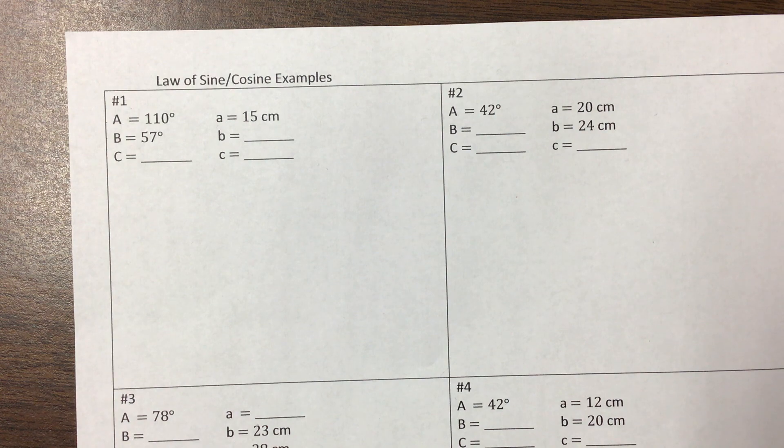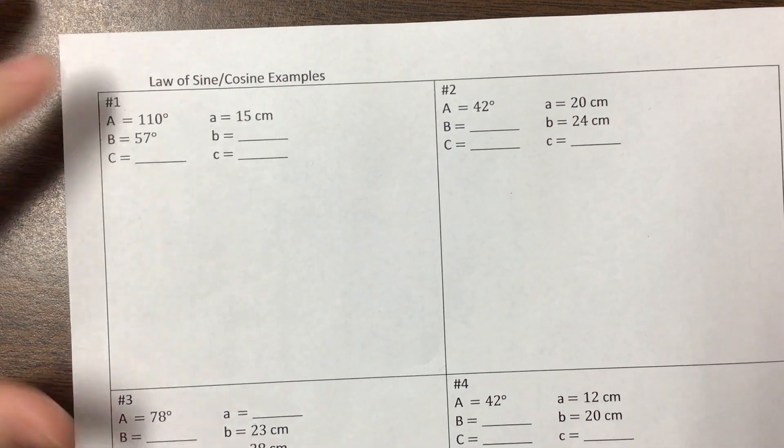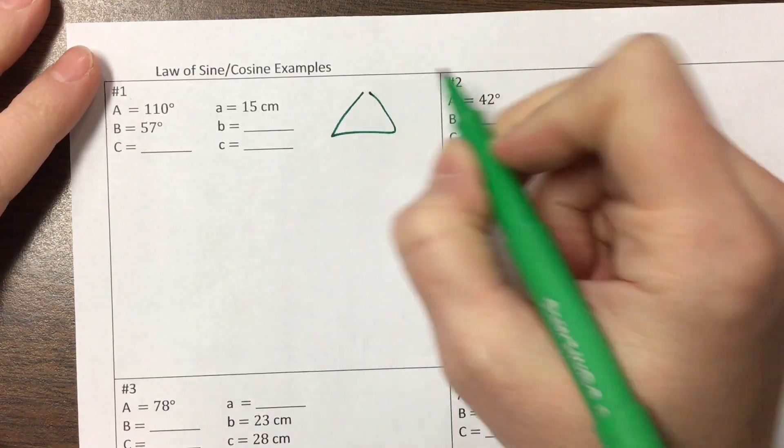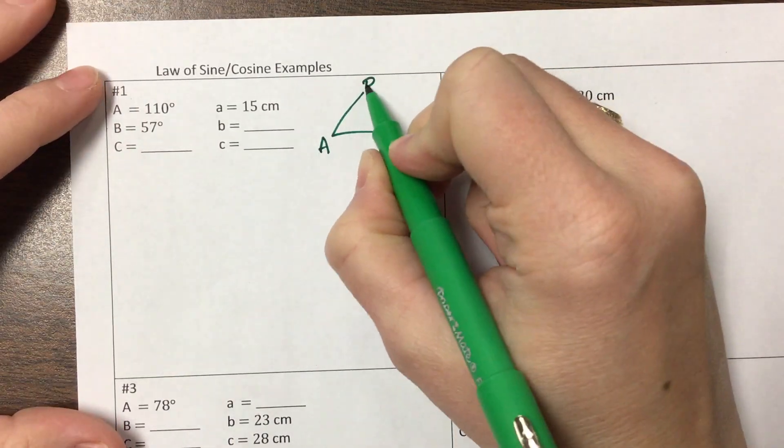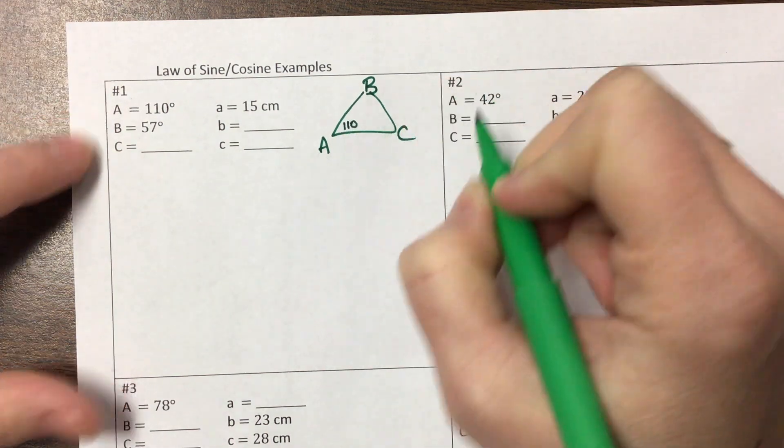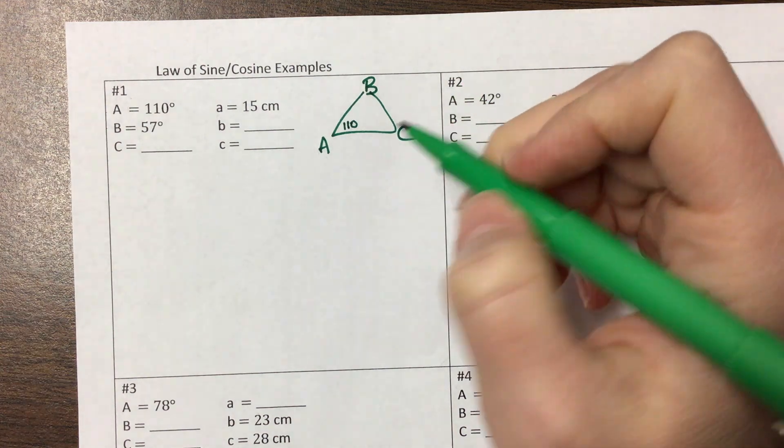This is the first video, notice my paper is blank. So with all of these, the first thing I want to do is draw a triangle and figure out what's going on. I'm not overly concerned if my triangle is to scale, but I do need things. This is 110 degrees, obviously not to scale, it should be obtuse.